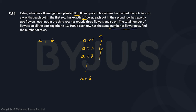The total sum of flowers will be equal to a × b(b+1)/2. Here 'a' is the number of pots in each row, and the number of flowers per row is 1, 2, 3, and so on. Taking 'a' common gives the sum of the first b natural numbers, which is b(b+1)/2.